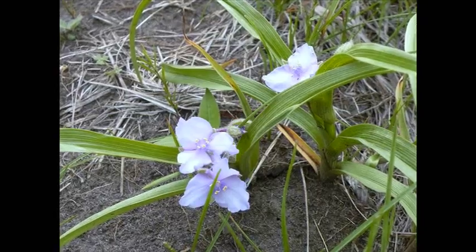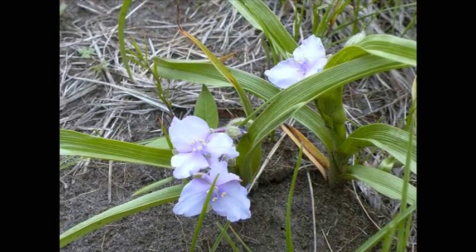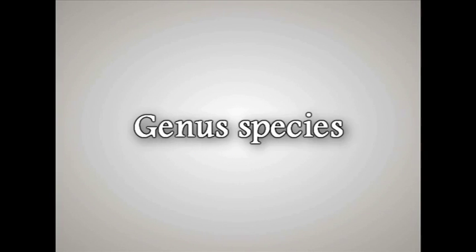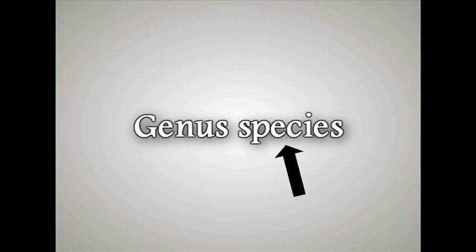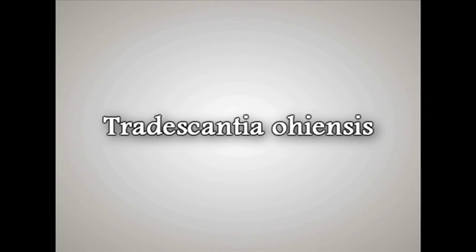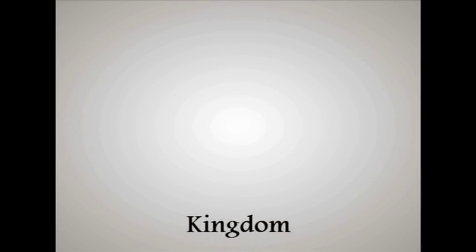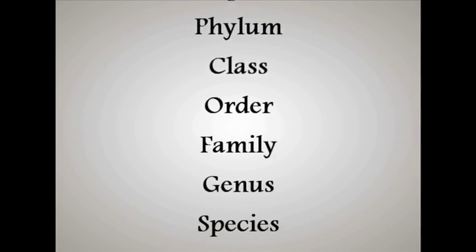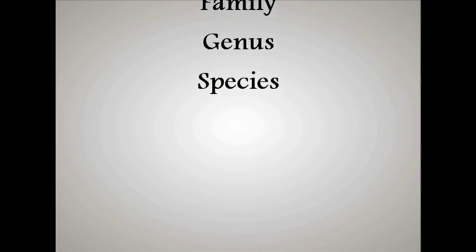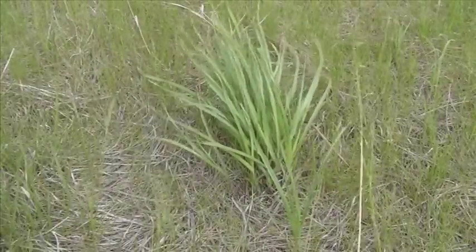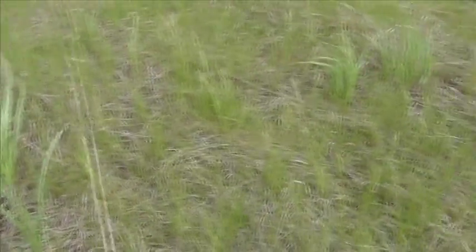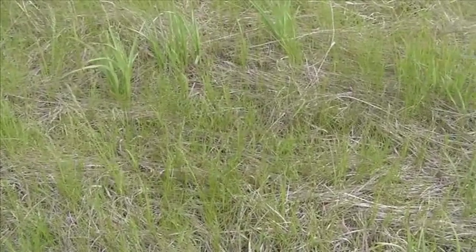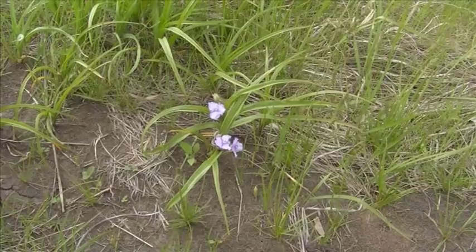Spiderwort is a plant classified in the Commelinaceae family. The scientific name contains two words. The first word is always capitalized, just like when you write your own first name. The second word is always written in lowercase. All plants are in the kingdom Plantae. As you classify a plant from kingdom to species, fewer and fewer remain at each level. For example, all spiderwort are plants, but not all plants are spiderwort. It is a challenge to classify plants all the way to species level, even for scientists. But by practicing, you will become more familiar with the methods and language that scientists use.